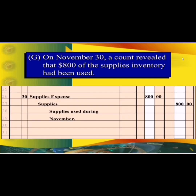Next comes the November 30th transaction, which reveals that supplies worth 800 have been used. Those supplies which have been consumed are debited under the name 'supplies expense,' and supplies, which is your asset account, are credited with that specific amount.